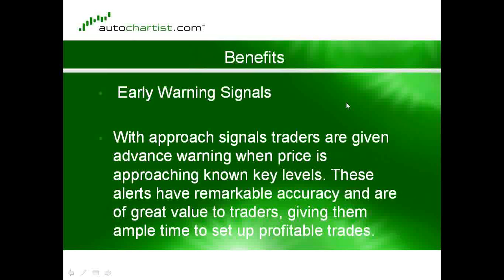You also get an early warning signal — that's another benefit. With an approach signal, traders are given advance warning when price is approaching known key levels. You can be looking at the Auto Chartist screen and hear the alert go off. Auto Chartist will plot a horizontal line where there wasn't one a minute ago because conditions have changed. That gives you an early warning that the market has hit a critical point — it's almost like radar, hitting a point that becomes a blip on the screen.